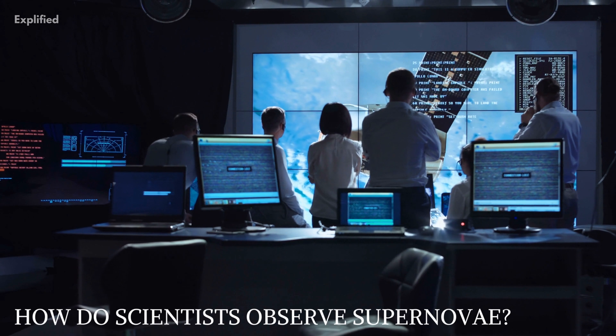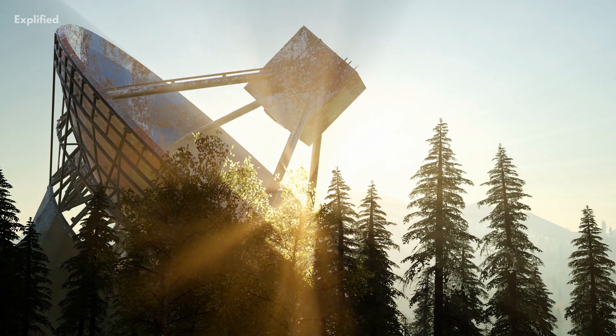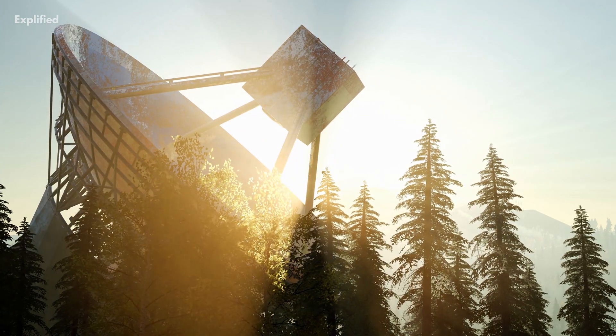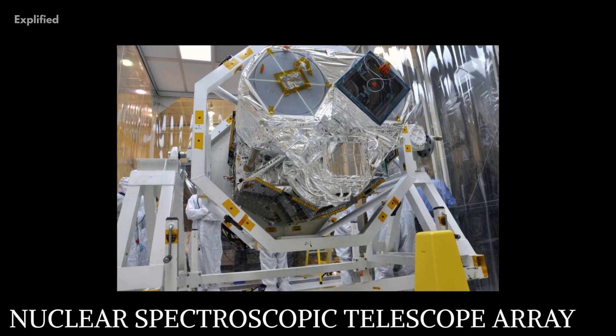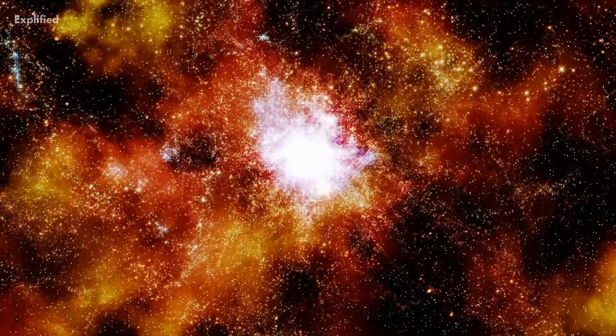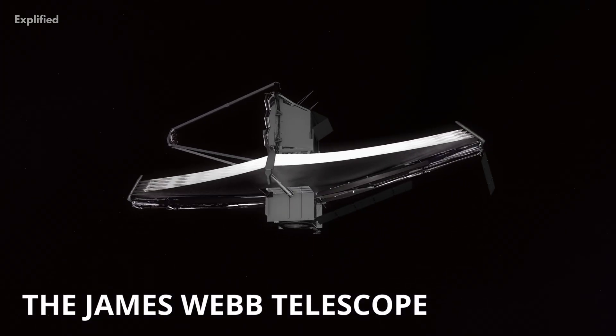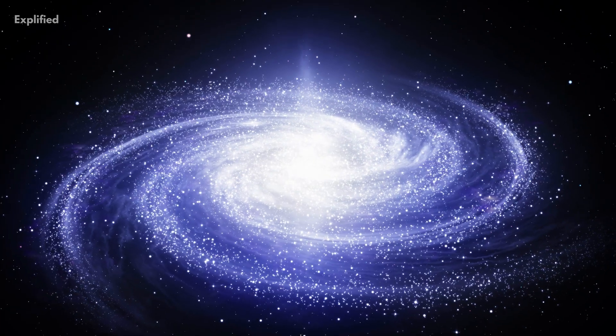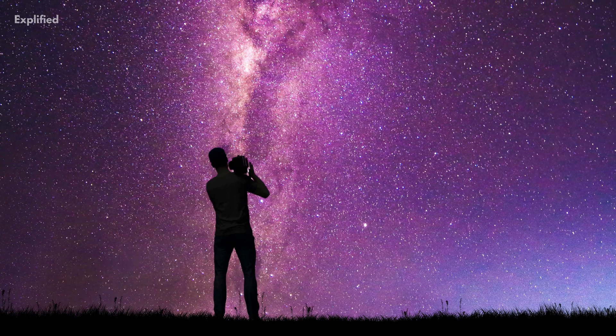How do scientists observe supernovae? Astrophysicists use a wide range of telescopes to study supernovae. One example would be NuSTAR, the Nuclear Spectroscopic Telescope Array, which helps scientists study these explosions. The James Webb Telescope, which has recently been launched into space, is also being used to understand the birth and the aftermath of supernovae.